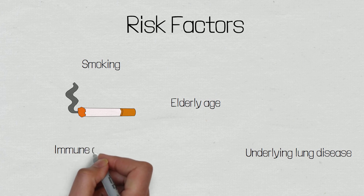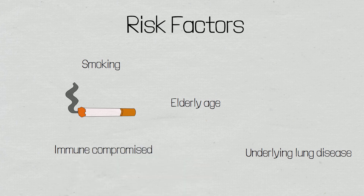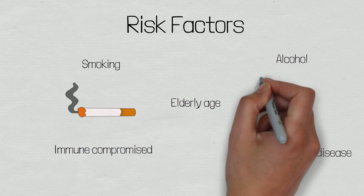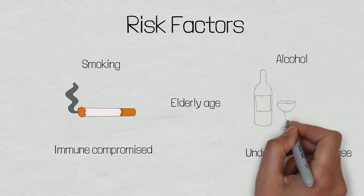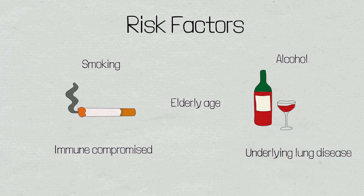Immunocompromised patients, such as those with an immunoglobulin A antibody deficiency, will not have the normal defence mechanisms to help protect them against foreign pathogens. Finally, alcohol consumption — alcohol is a central nervous system depressant that can depress the cough reflex as well as promote aspiration, and alcohol also damages alveolar macrophages.